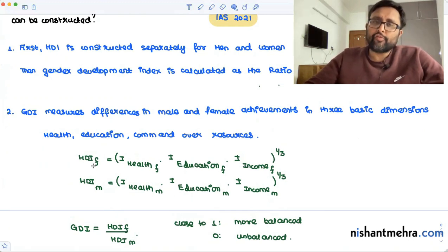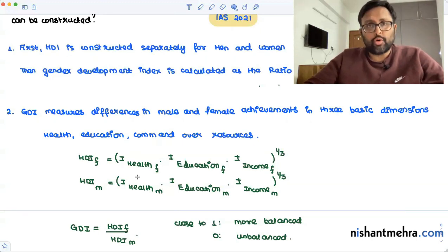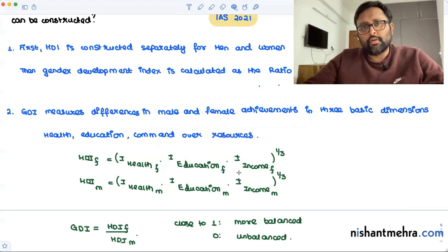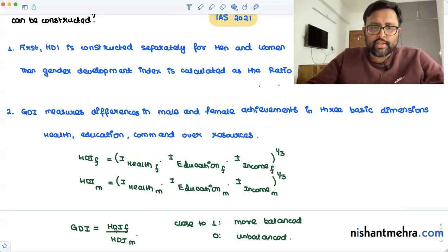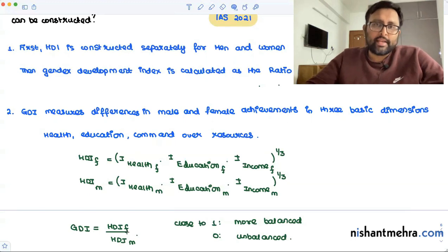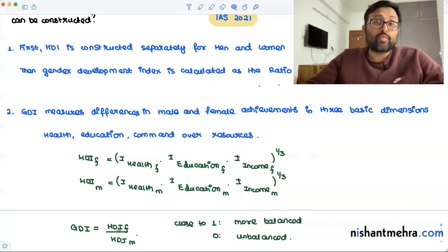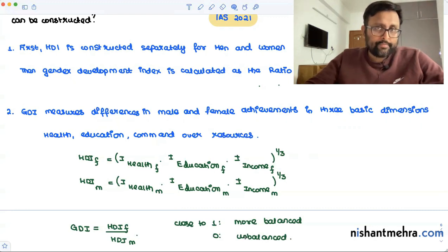You find out the HDI for female and the HDI for male. After 2010, HDI is calculated as the geometric mean of the three dimensions — health, education, and income. You find this ratio: HDI for females divided by HDI for males. If it equals one, the situation is balanced between male and female. If it is close to zero, it means HDI for females is very low while HDI for males is high, making the ratio smaller and the situation unbalanced.